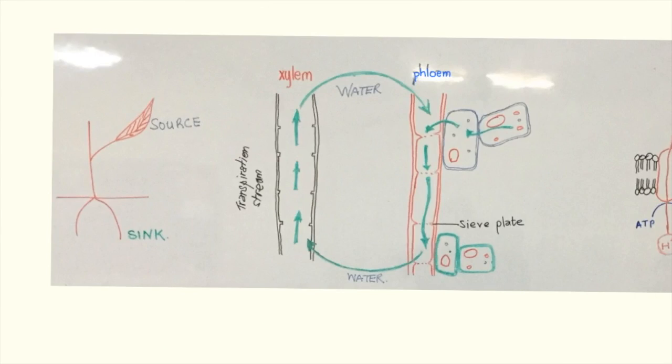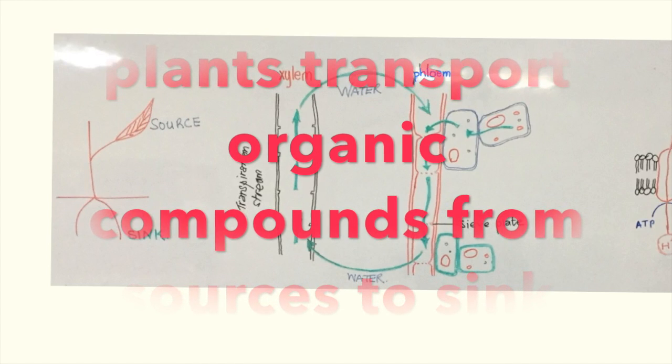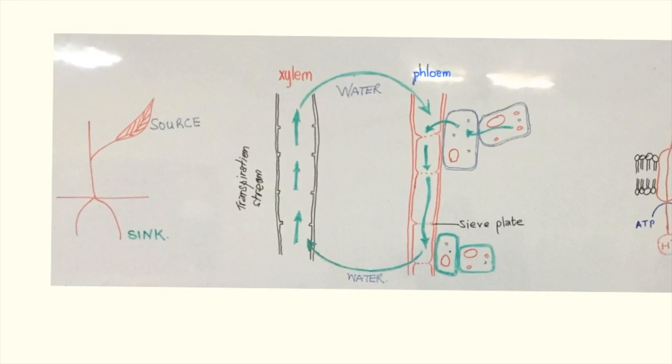This explanation applies specifically to angiospermophytes, or the flowering plants. In these plants, photosynthesis occurs in the leaves. Sucrose is the form in which sugar is transported out of these areas of production, or sources, to areas that need sucrose, or sinks. This movement of sucrose from a source to a sink happens through a system of tubes known as the phloem. The phloem runs very close to the xylem, the system that takes water up from the soil.